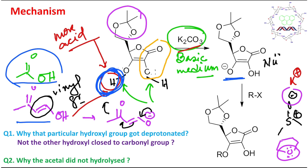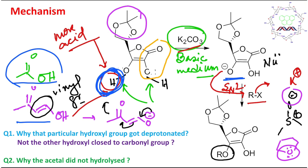The anion attacks RX from the backside — this is an SN2-type reaction. I have already discussed many lectures on SN2. This is essentially ether formation, or from a carboxylic acid point of view, it is ester formation. From a simple carbon-oxygen perspective, this is a Williamson ether synthesis type reaction. The product formed contains the OR group — and this is the answer.